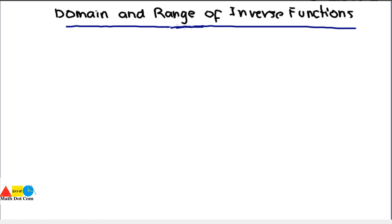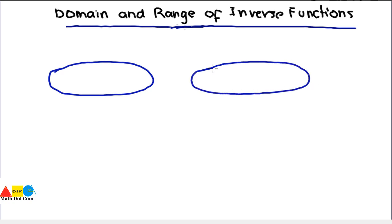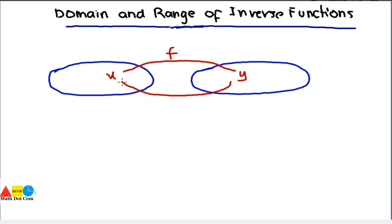As we have already seen what inverse functions are and how you can find them, we will start with a short overview of the concept so that we understand how to find the domain and range of the inverse function. As seen in our previous lecture, if you are given the function y = f(x), then f-inverse will be the opposite function, going in the opposite direction, and we perform all operations in the opposite direction compared to f(x).